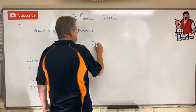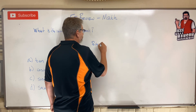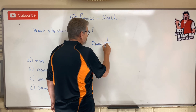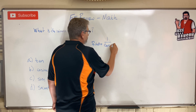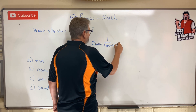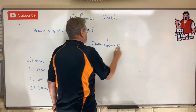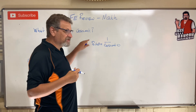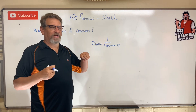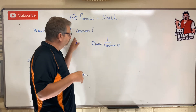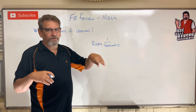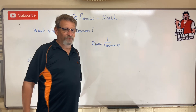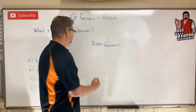Here's how I remember that. Sine of theta is equal to 1 over cosecant. It seems like sine and secant ought to go together because they both start with an S, and cosine and cosecant ought to go together because they start with a C. But the way I remember it is they're backwards — that's the only way I can remember it.